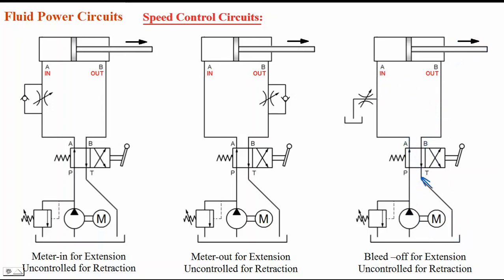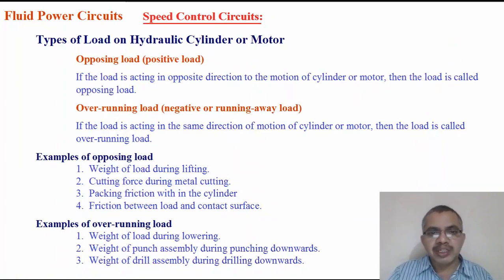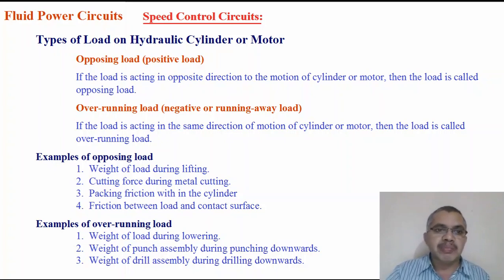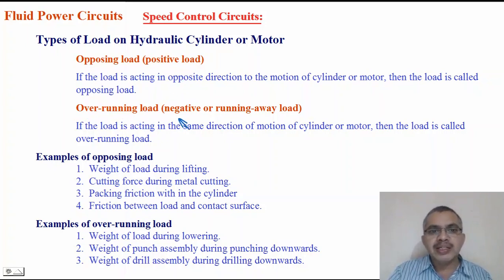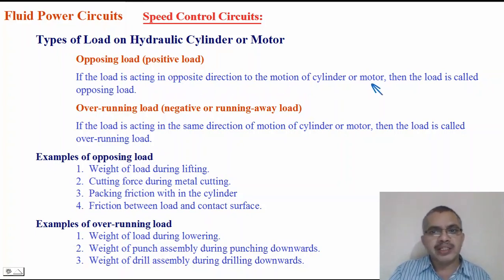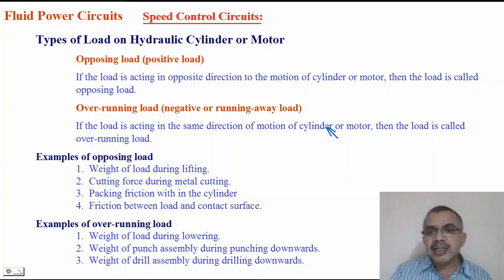To understand the application of meter-in, meter-out, and bleed-off circuits — that is, which circuit to apply where — we should understand the basic types of loads: opposing load and over-running load. Opposing load is called positive load. Over-running load is called negative load or running-away load. Opposing load is that which acts in the opposite direction to the motion of the cylinder or motor. Over-running load is that which acts in the same direction of motion.